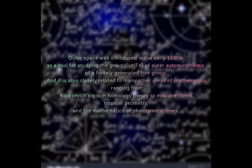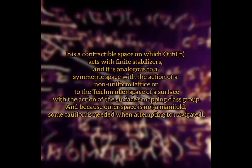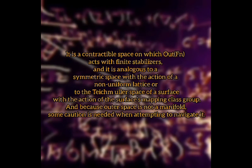Outer space, as a mathematical concept, was introduced in the early 1980s as a tool for studying the group of outer automorphisms of a finitely generated free group. It is also closely related to many other areas of mathematics, such as graph homology theory, modular forms, tropical geometry, and the mathematics of phylogenetic trees. It is a contractible space on which the outer automorphism group acts with finite stabilizers.